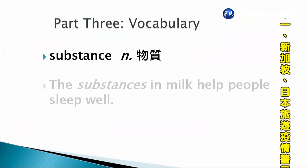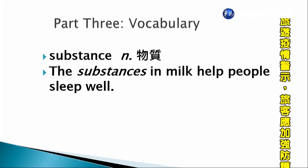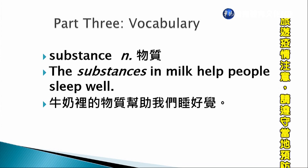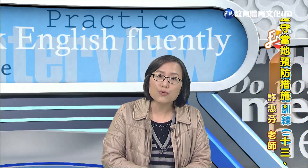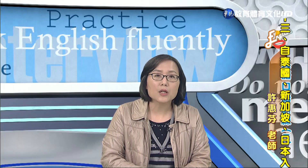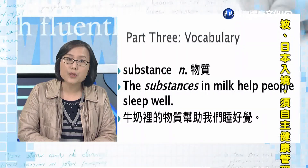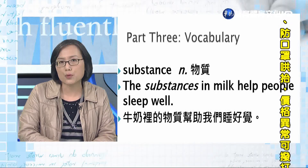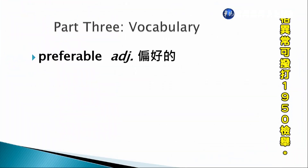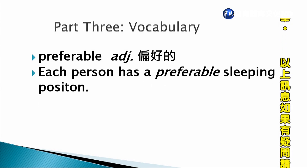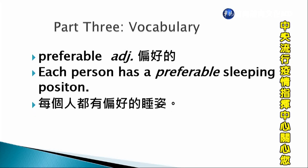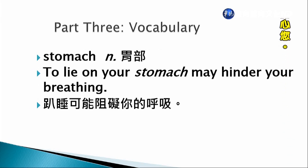Substance，物質。The substances in milk help people sleep well. 牛奶裡面有一些物質跟營養素，可以幫助我們睡好覺。For example, the substances in milk contain nutrients such as calcium, minerals, vitamins, or protein. Preferable，偏好的。Each person has a preferable sleeping position. 每個人都有他偏好的睡姿，sleeping position就是睡覺的姿勢。Stomach，胃部。To lie on your stomach may hinder your breathing. 趴睡很有可能阻礙你的呼吸。